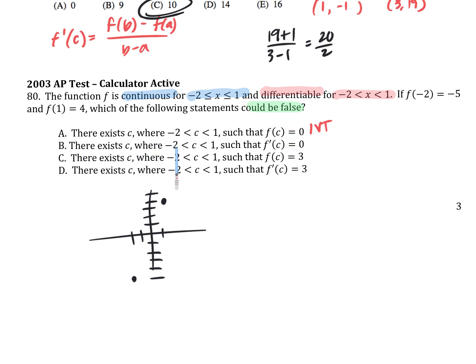There exists an x value between negative 2 and 1 such that the slope is 0. Could my slope be 0 somewhere between there? What if my function looked like this — could it have a slope of 0? Does it have to have a slope of 0? No. So which one of these could be false? I feel like that could be false.